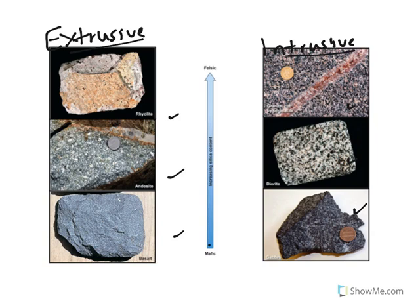Now I want to take a minute to let you know that even though we have these six different rocks, they're really the same thing. Rhyolite is the same thing as granite. They're the same mineral composition — same percentages, same minerals, same everything. The only thing that's different about them is their texture.